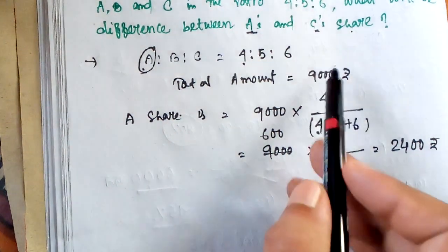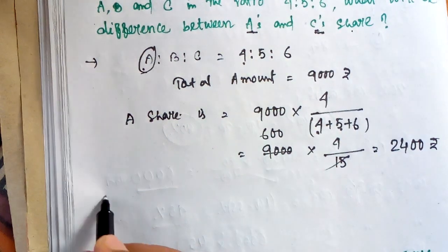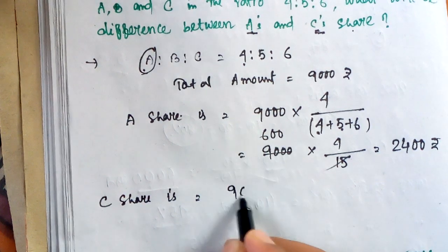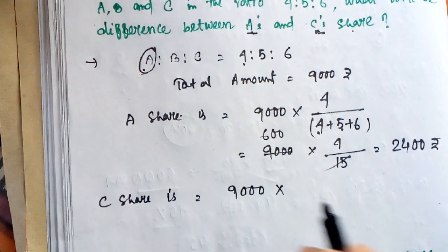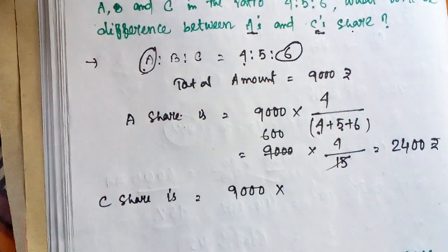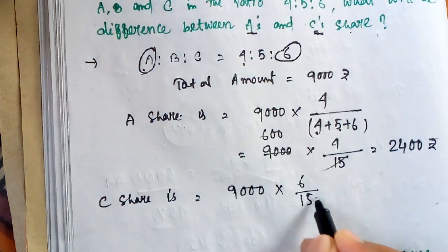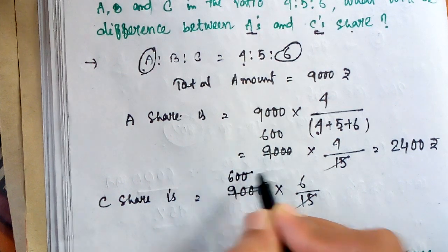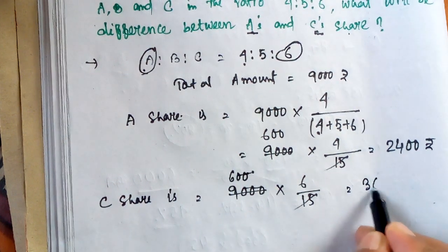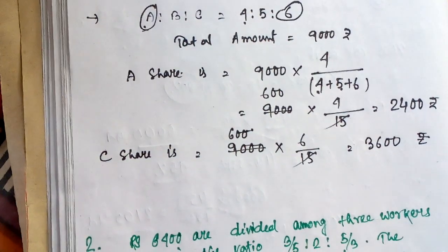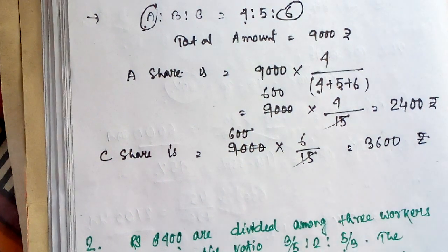And now, we try C's share. C's share is 9000 into 6, which is 6 by 15. And we can divide here 600 and get 3600 rupees.